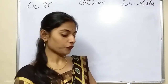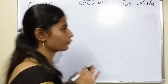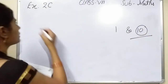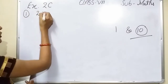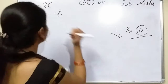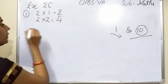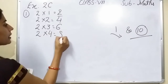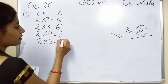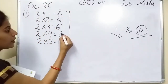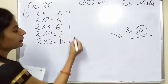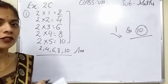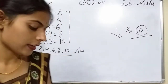You have to write the multiples of 2 between 1 and 10, and 10 is also included. The multiples of 2 are: 2×1=2, 2×2=4, 2×3=6, 2×4=8, and 2×5=10. So the answer is 2, 4, 6, 8, and 10. These are the multiples of 2 up to 10.